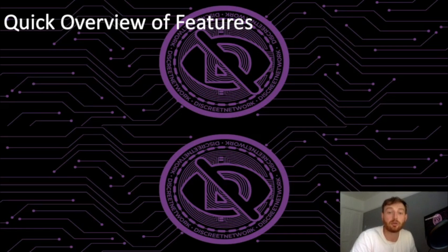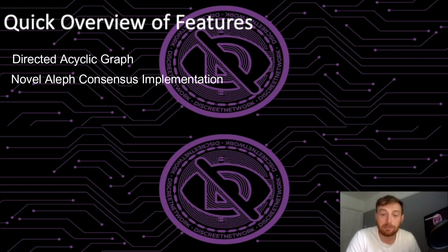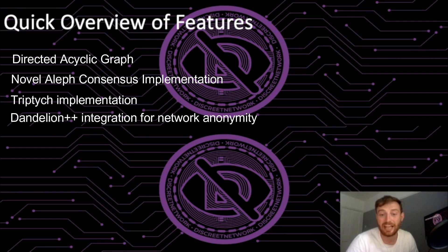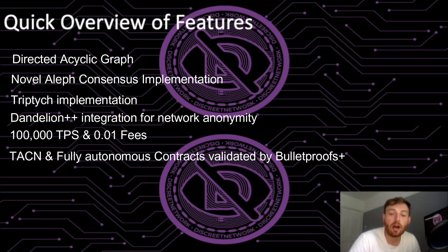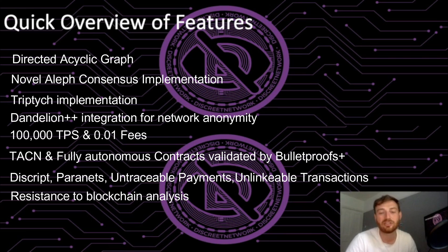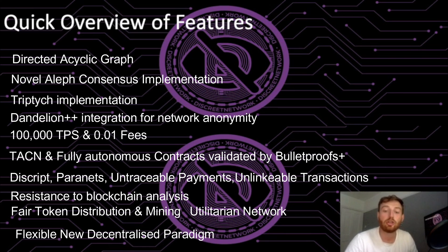To give a quick overview of some of the key features: Directed Acyclic Graph, novel Aleph consensus implementation, Trippe implementation, Dandelion++ integration for network anonymity, previously unseen consensus throughput of 100,000 transactions per second, negligible transaction fees under one cent USD, Trustless Autonomous Compute Nodes, fully automated contracts validated by Bulletproof+, Descript programming language, paranets, untraceable payments, unlinkable transactions, resistance to blockchain analysis, fair token distribution and mining, and a utilitarian decentralised network paradigm.